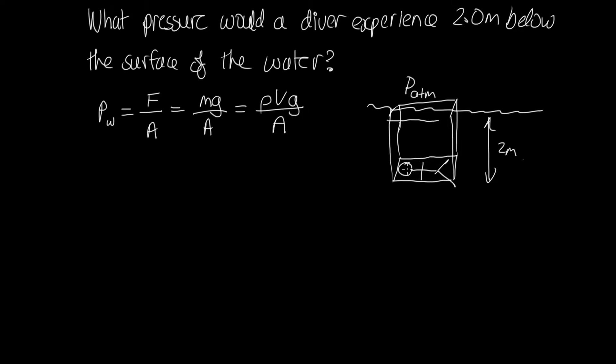Now the volume of water, we were modeling this diver as a rectangular prism, but we really don't have to do that. The diver's got surface area A, and then we're just interested in the volume of the water above the diver. So that's going to be the height of water times the surface area of the diver. So we can write this is going to be equal to the density times A times hg, and then divided by A. And you can see that the A's cancel out, and we have an equation for the pressure due to the water is rho hg.